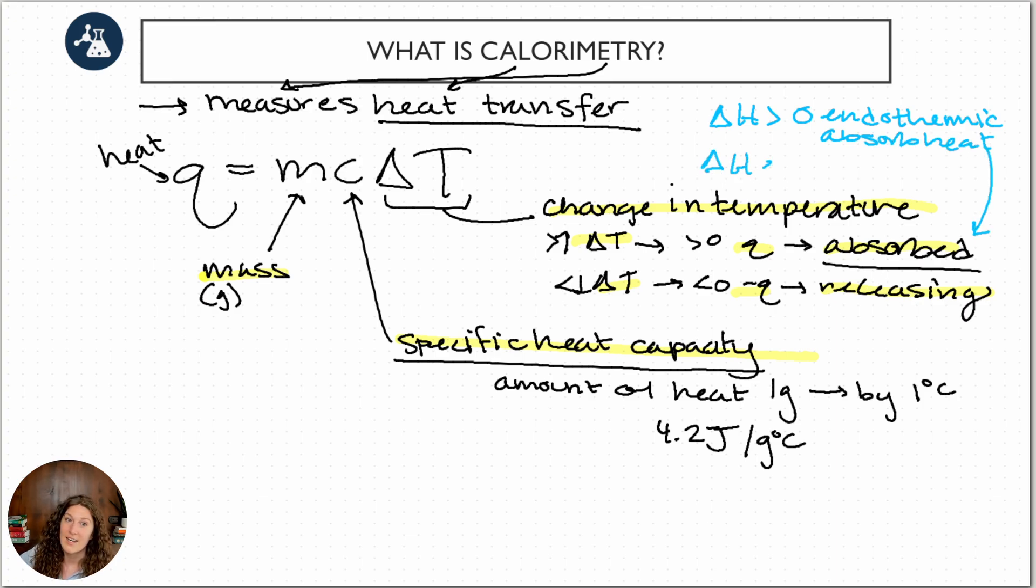Negative delta H, exothermic, releasing heat. So our delta H is usually in joules or kilojoules per mole, so that's where we care about our per mole, whereas this guy here is just usually in our measurement of joules.